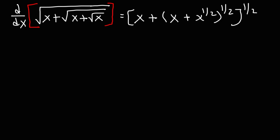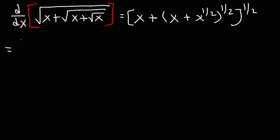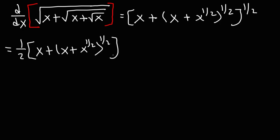The first thing we're going to use is the power rule on this exponent here. We're going to move the one half to the front, and then keep the inside part the same — that's x plus x plus x to the half, raised to the half. And now we'll subtract the exponent by one: one half minus one is negative one half.